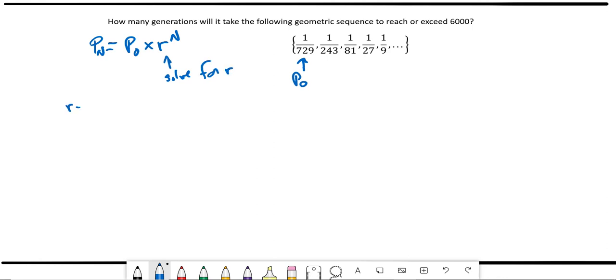And r can be solved by taking the next term and dividing it by the previous term. It doesn't matter which two terms you grab from the sequence. If I take the last two, we would say that the next term is 1/9, and it's being divided by the previous term, which is 1/27.